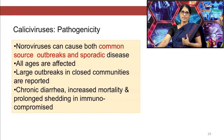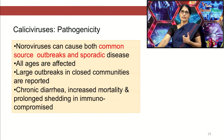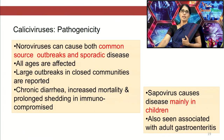Coming to the pathogenicity of caliciviruses: noroviruses can cause both common-source outbreaks and sporadic disease, affecting all age groups. Large outbreaks are reported in close communities like hospitals, hostels, jails or homes for elderly persons. In immunocompromised persons, noroviruses can cause chronic diarrhea with increased morbidity and mortality, and there is increased shedding of virus. Sapoviruses cause disease mainly in children, though sometimes they are also associated with diarrhea in adults.